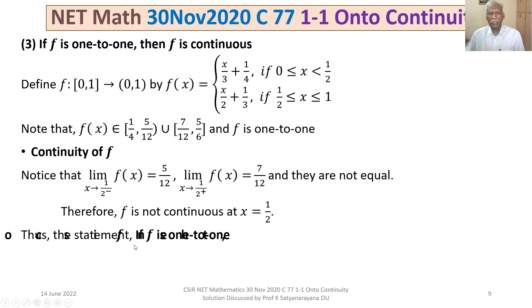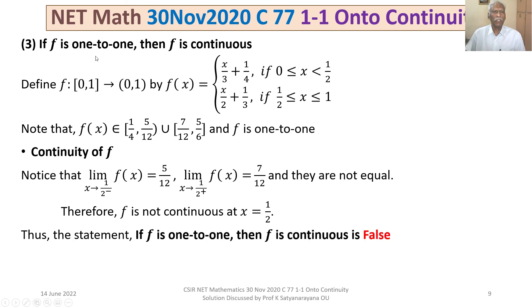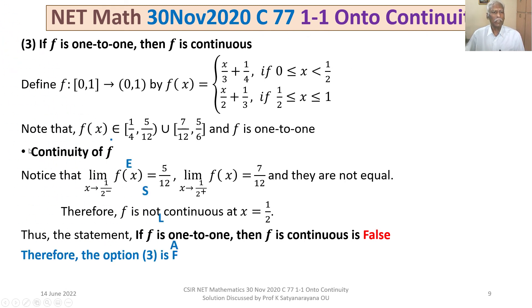Thus, the statement given in option 3 — if f is 1-to-1, then f is continuous — is false. Therefore, option 3 is false and is among the answers.